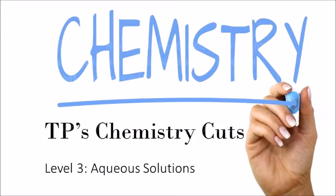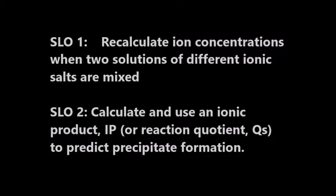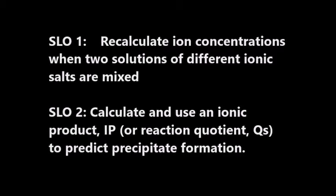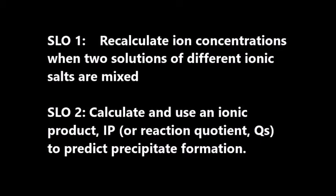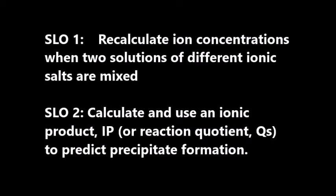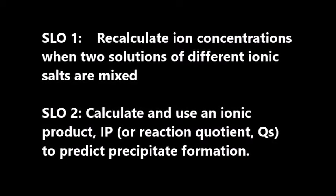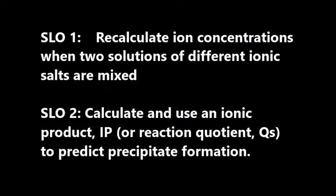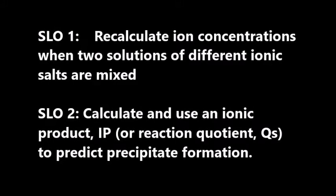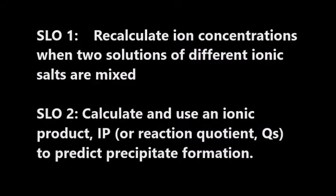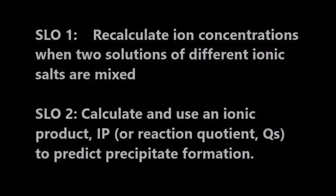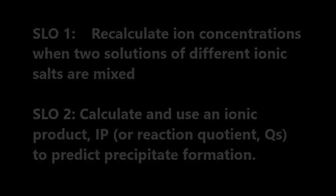Hello Year 13 Chemists, welcome to TP's Chemistry Cuts. In this clip we'll look at how to recalculate iron concentrations when two solutions of different ionic salts are mixed together, and then calculate and use an ionic product or reaction quotient to predict precipitation formation.